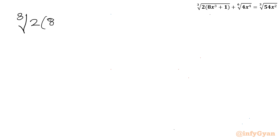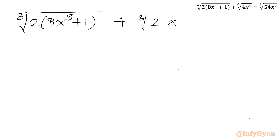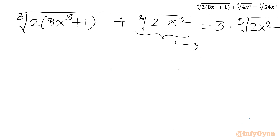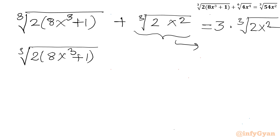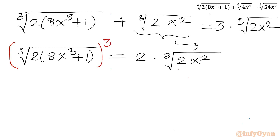Let us rewrite our equation. We have: cube root of 2(8x³ + 1) plus cube root of (2x²) equals 3 times cube root of (2x²). Now I will take the cube root of (2x²) term to the RHS. So it becomes: cube root of 2(8x³ + 1) equals (3 − 1) times cube root of (2x²), which is 2 times cube root of (2x²). Now I will cube both sides to cancel the cube root.